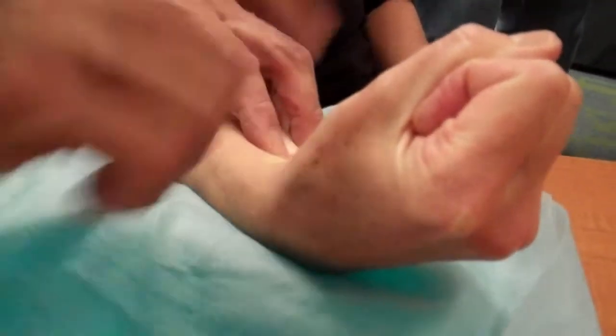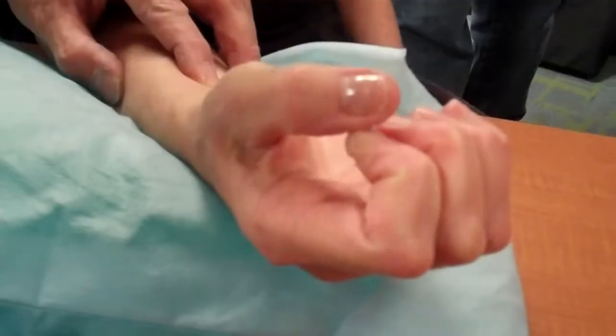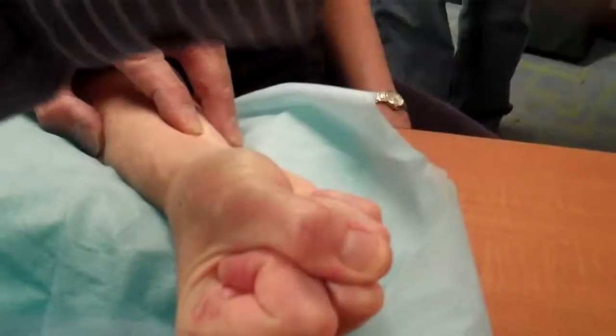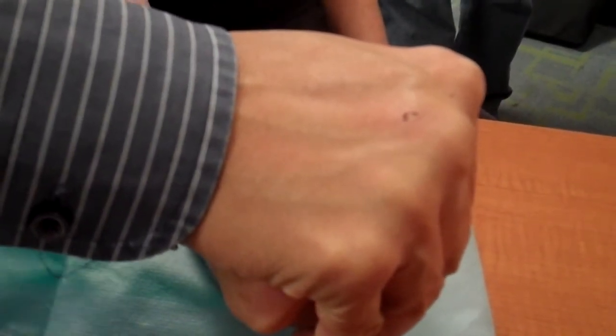Make a fist, then fight against. See the flexor carpi radialis, palmaris longus, so right in between.